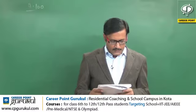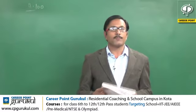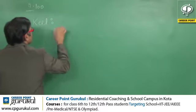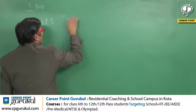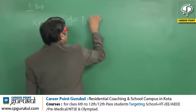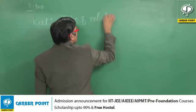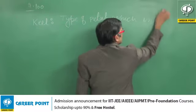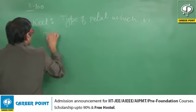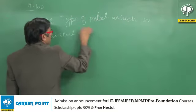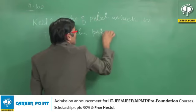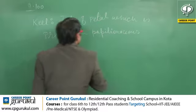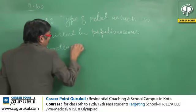In question 100, the question is: keel is the characteristic feature of the flower of which plant? Keel is actually the type of petal which is present in Papilionaceous Corolla.